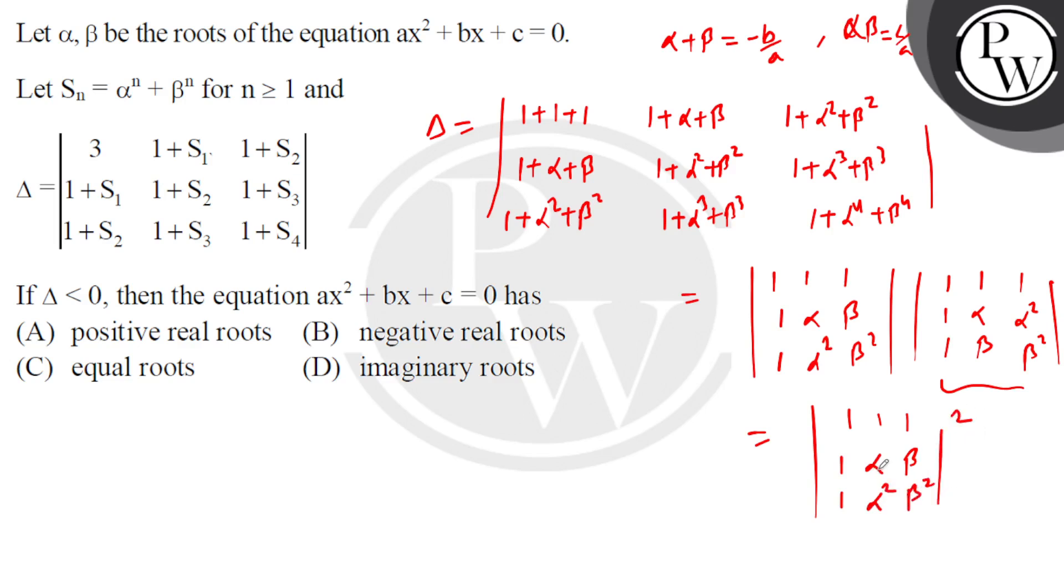This is a standard determinant. For the form |1, 1, 1|, |a, b, c|, |a², b², c²|, that equals (a-b)(b-c)(c-a).